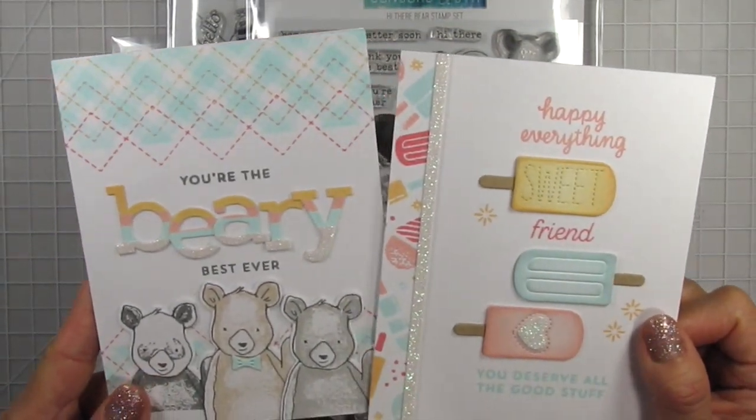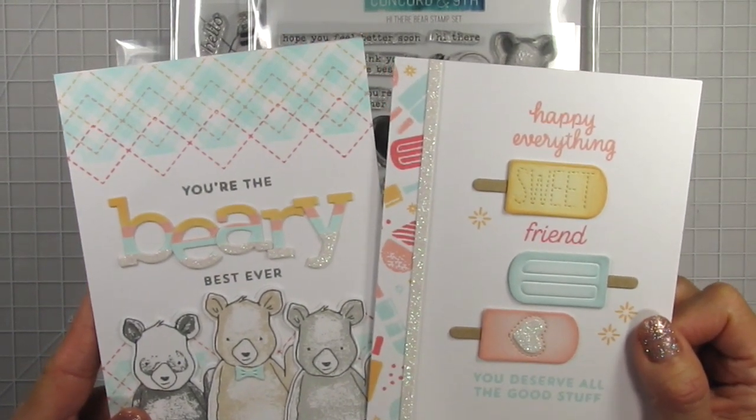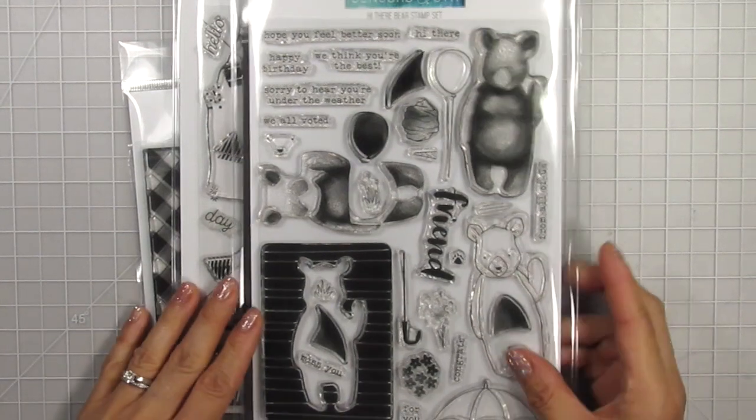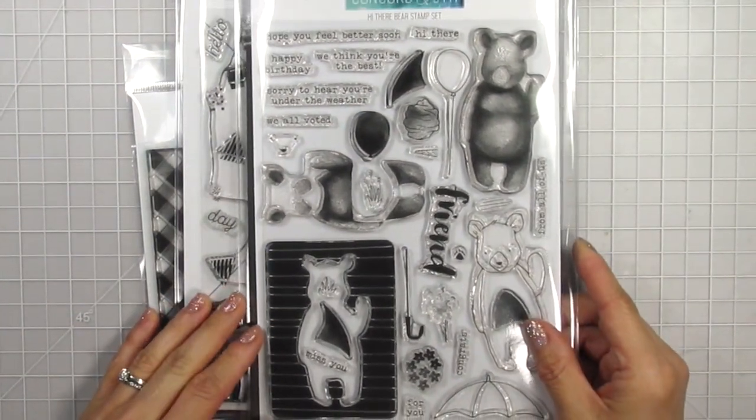The first one is the Hi There Bear stamp set and this is the set that features the panda. You can stamp an outline and use the panda filler, complete filler, or leave it blank to create any type of bear you want, from polar bears to brown bears.